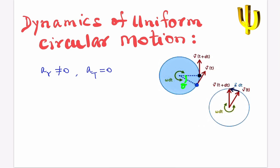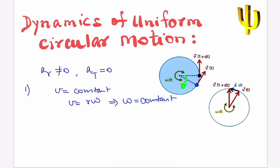There are very important features for uniform circular motion. The first one is: as speed is constant, v is constant. Then v is given by r·omega, which implies that omega is also constant. So the motion will be periodic with time period T = 2π/ω = 2πr/v.